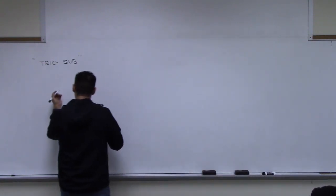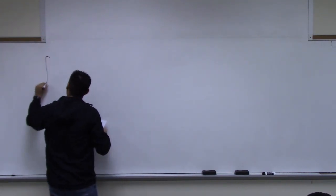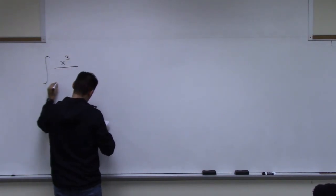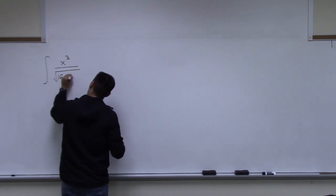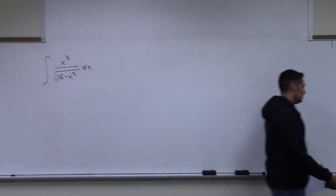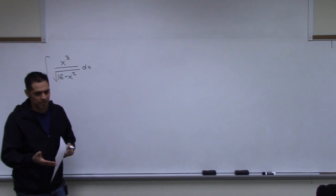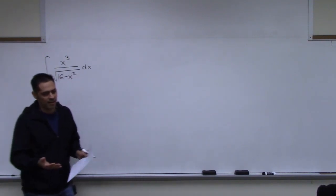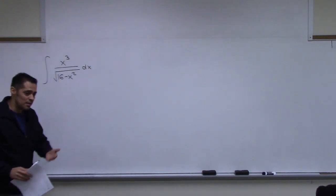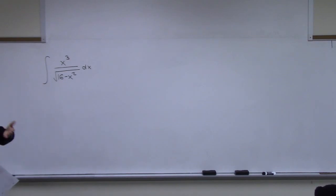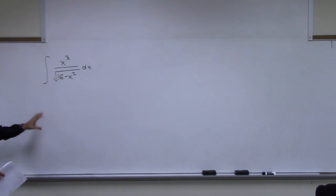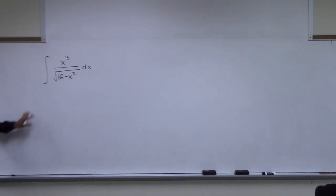We're going to do example 10. I want to do it two ways. If you were doing this without trig substitution, what method would you use? A basic u-substitution — let u equal 16 minus x squared. Yes, and du equals negative 2x dx.